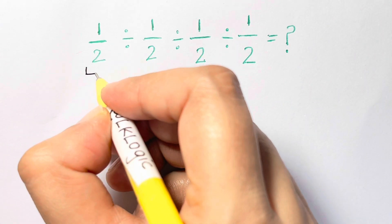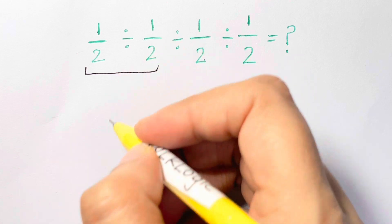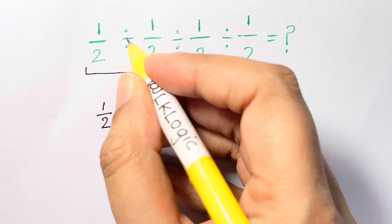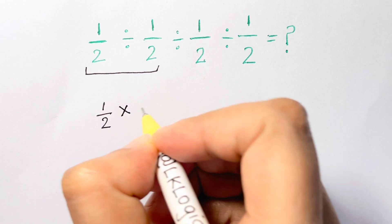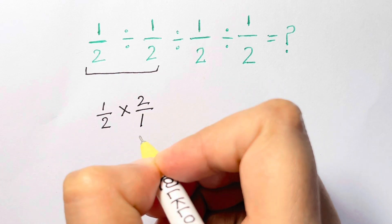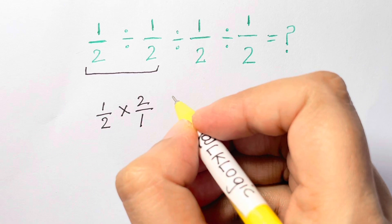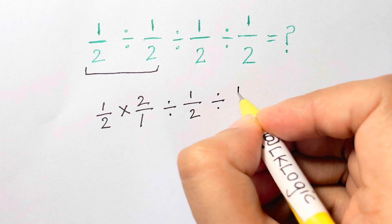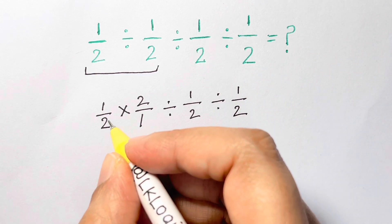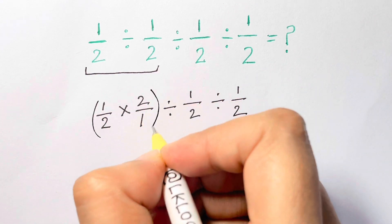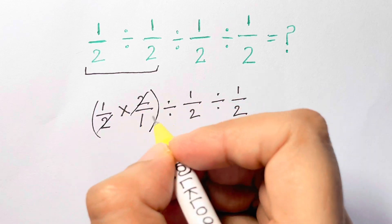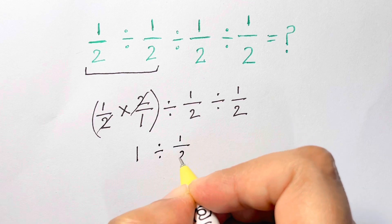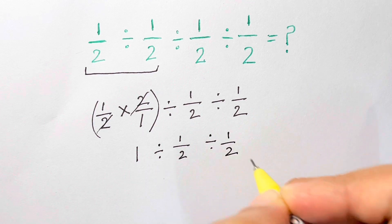So let's solve the first one on the left: 1 over 2 divided by 1 over 2. The division changes into times 2 over 1 — that's the KFC rule we apply. Keep the first fraction as-is, and divide by 1 over 2 divided by 1 over 2. The 2s cancel, leaving 1, divided by 1 over 2 divided by 1 over 2.